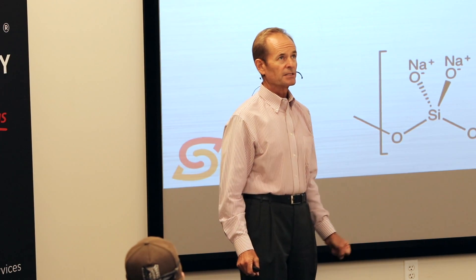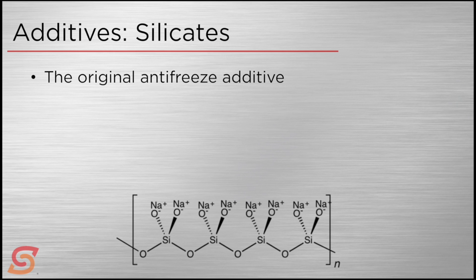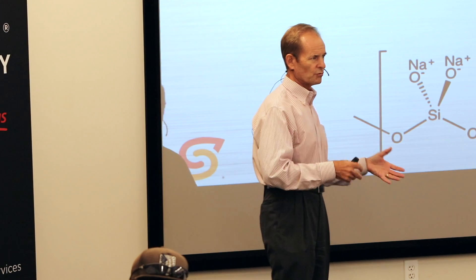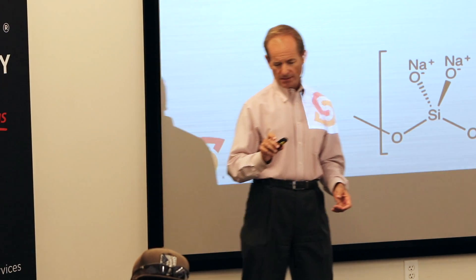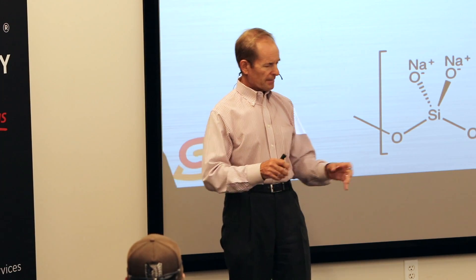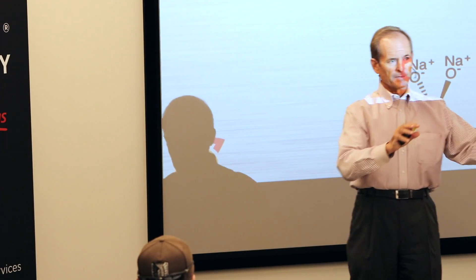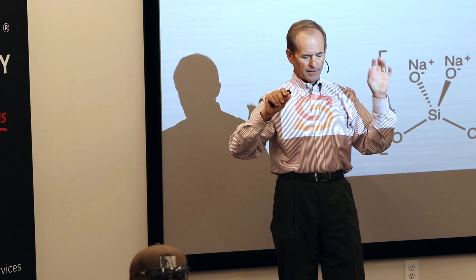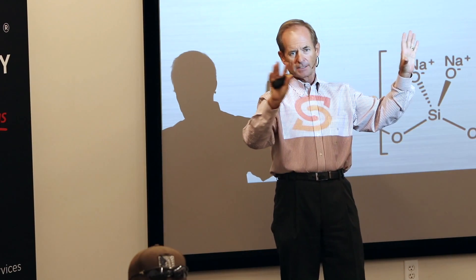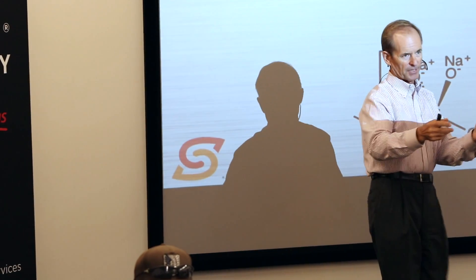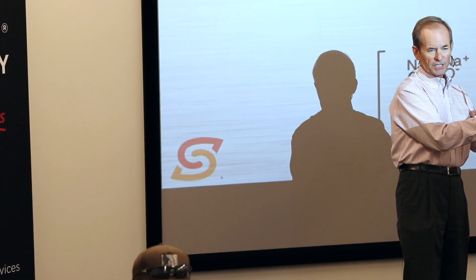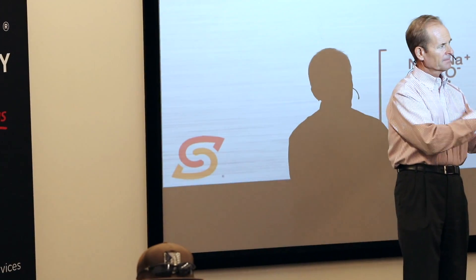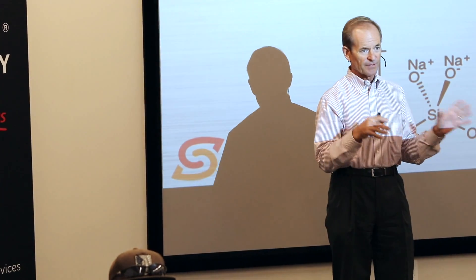Silicates are the original antifreeze additive, the basis of what's called conventional, traditional, old-school antifreeze. These silicate additives work by being dissolved in your antifreeze and poured into your engine. Once inside, they go around and deposit a protective coating on all metal surfaces — the radiator, the pump, the engine block — not allowing water and dissolved oxygen to reach the metal and begin corroding it. That's how silicate works as an anti-corrosive additive.